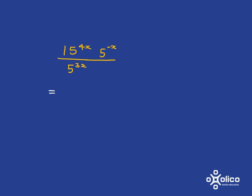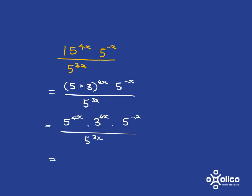This one here, we can see that 15 is 5 multiplied by 3. And so what we get here is that we've got 5 to the 4x and then 3 to the 4x and then 5 to the negative x and then 5 to the 3x. So what we can simplify and sort down are the things which have the 5 as the base because we can only use our rules of exponents when everything has the same base.